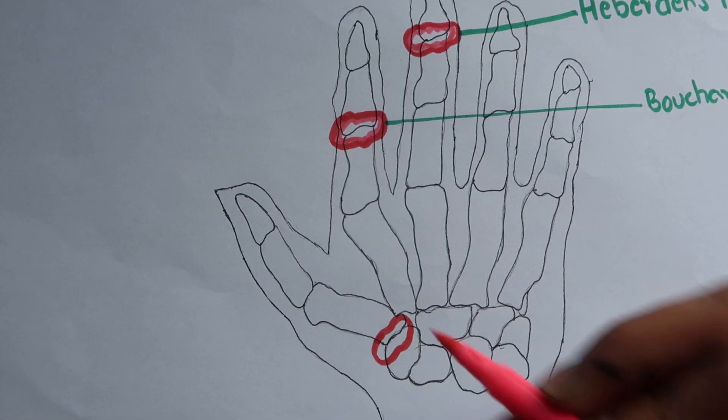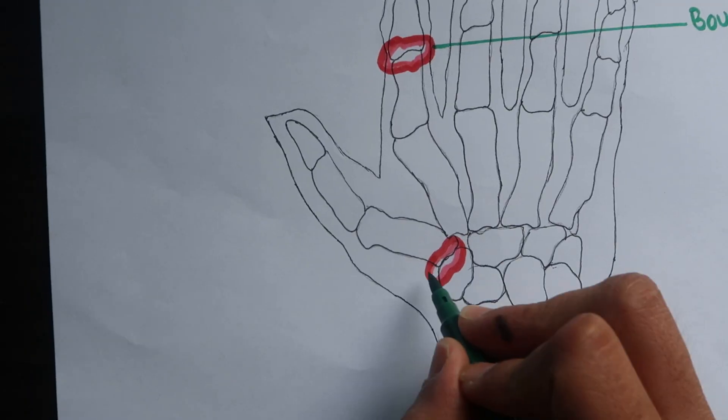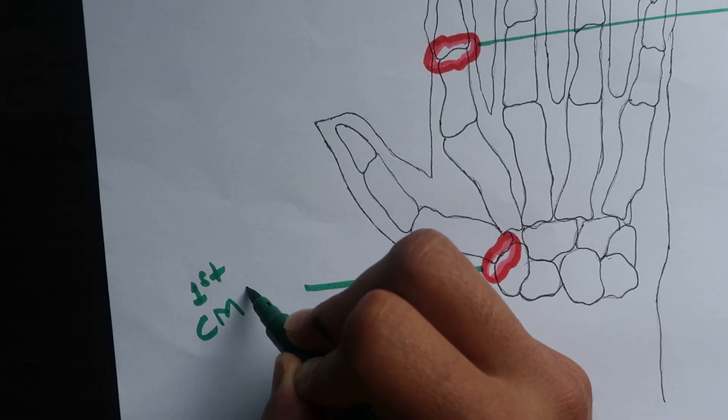Involvement of the first carpometacarpal joint is also common, leading to pain on trying to open bottles and jars.